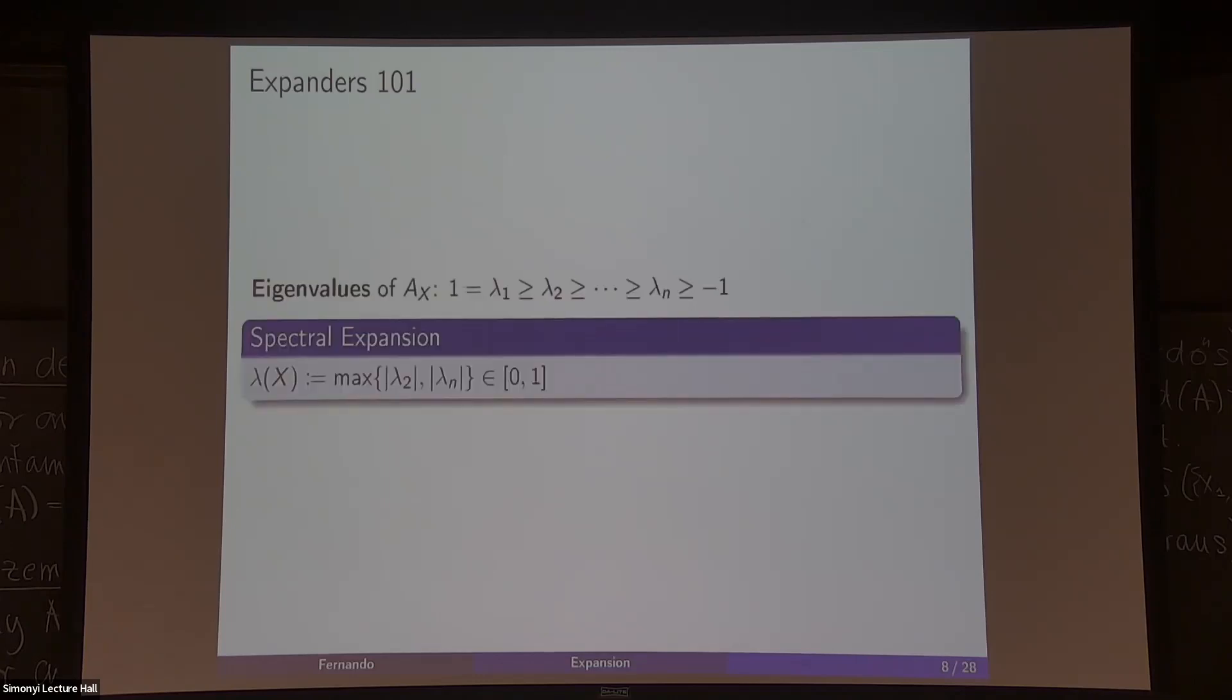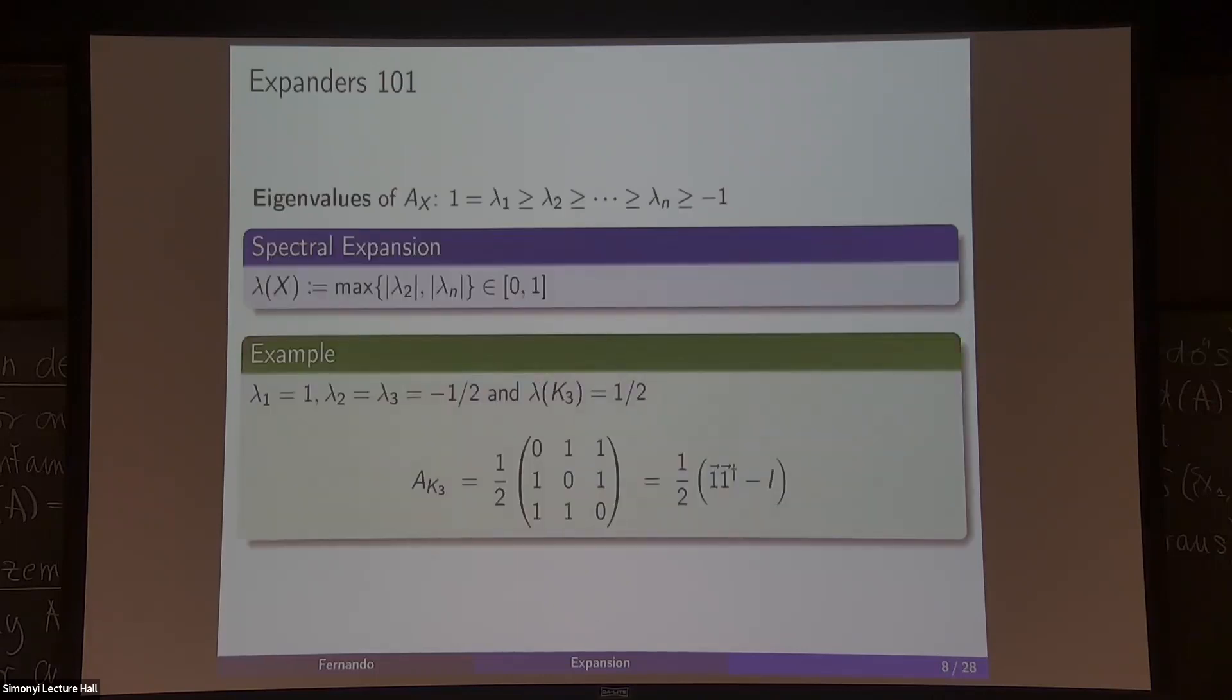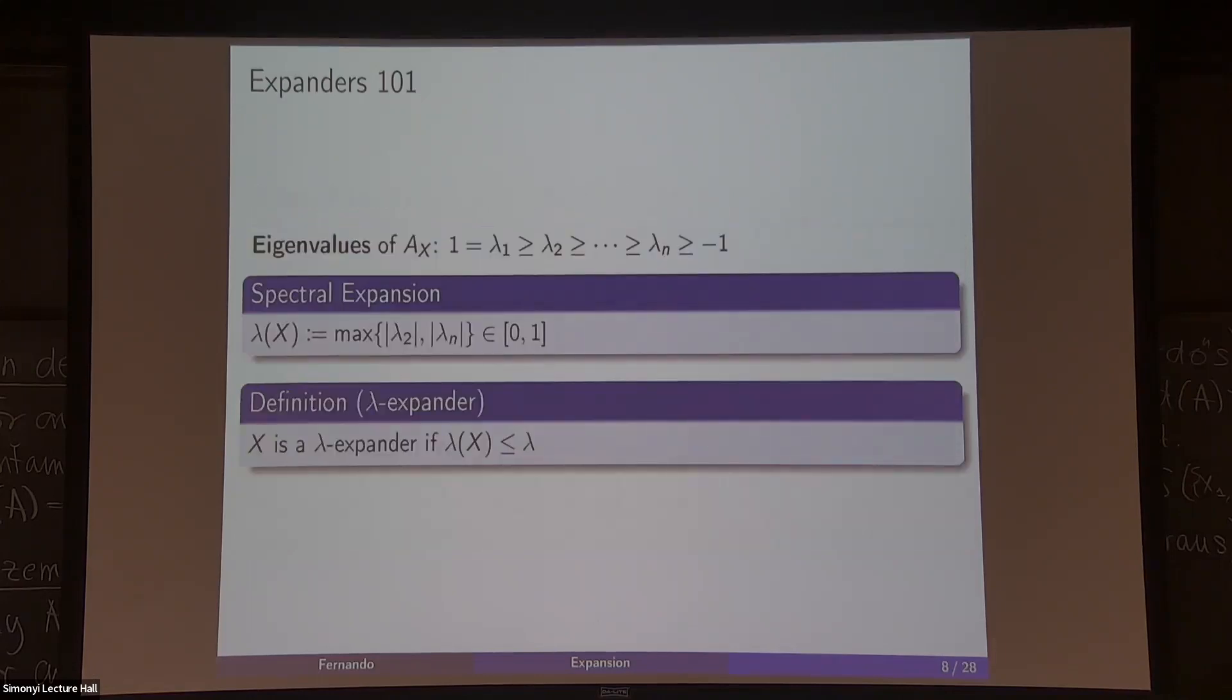To define a notion of expansion, you can define this parameter here. You can look at the second eigenvalue and the last one and consider the maximum. This is going to give us a number between zero and one, and that's going to be the spectral expansion for us. In our example of a triangle, we have one as an eigenvalue, minus a half and minus a half, so lambda is a half for our triangle. For us, a lambda expander is going to be any graph such that this expansion parameter is at most lambda.